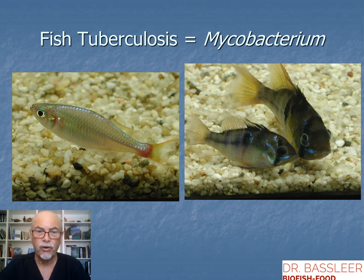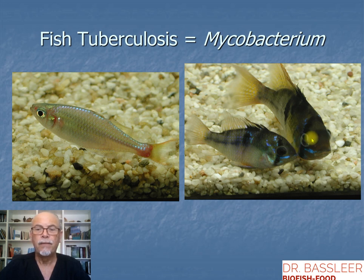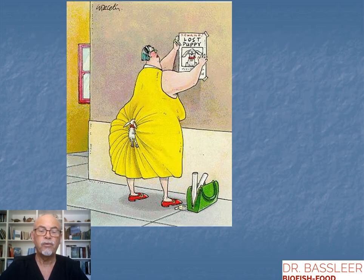Otherwise, your fish can suffer from fish tuberculosis like this here. You see the fish getting a dark color, getting bloated bellies, exophthalmos (Popeye), getting weaker and dying, or getting big red wounds or ulcers. Those are all symptoms of fish tuberculosis.